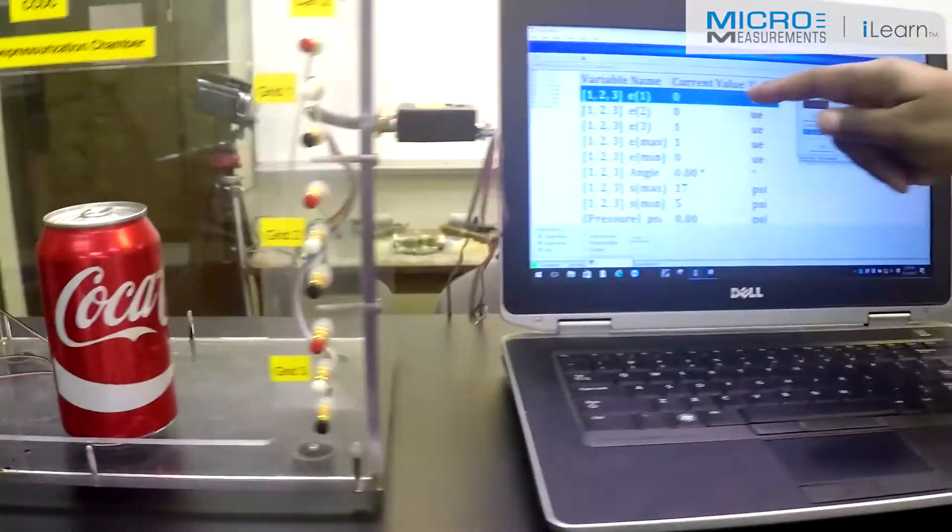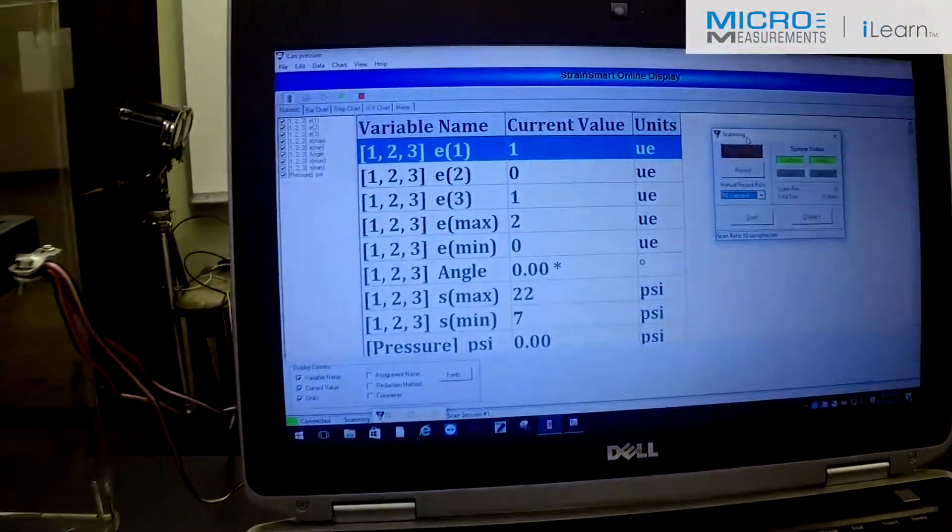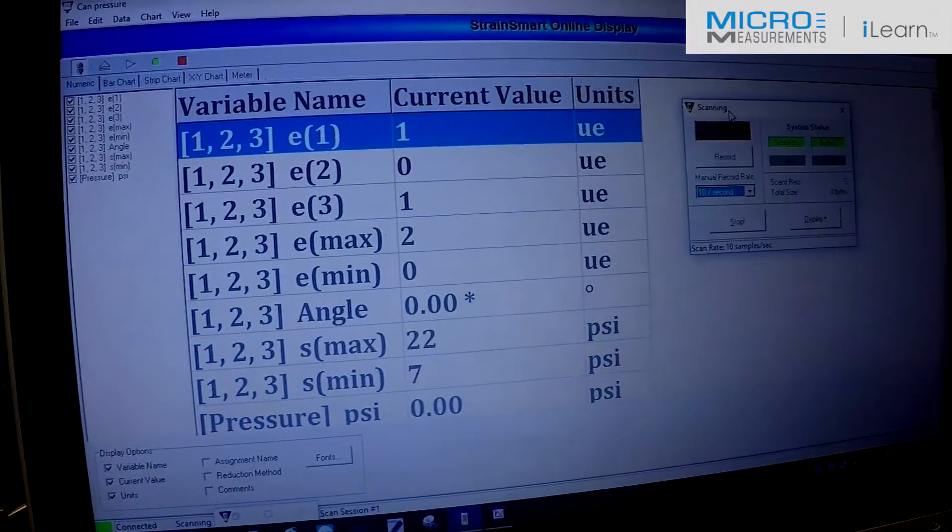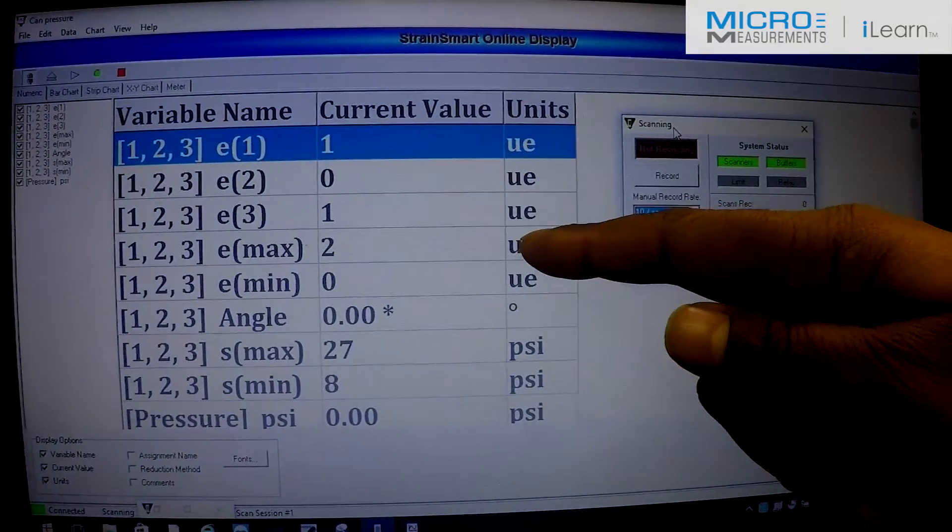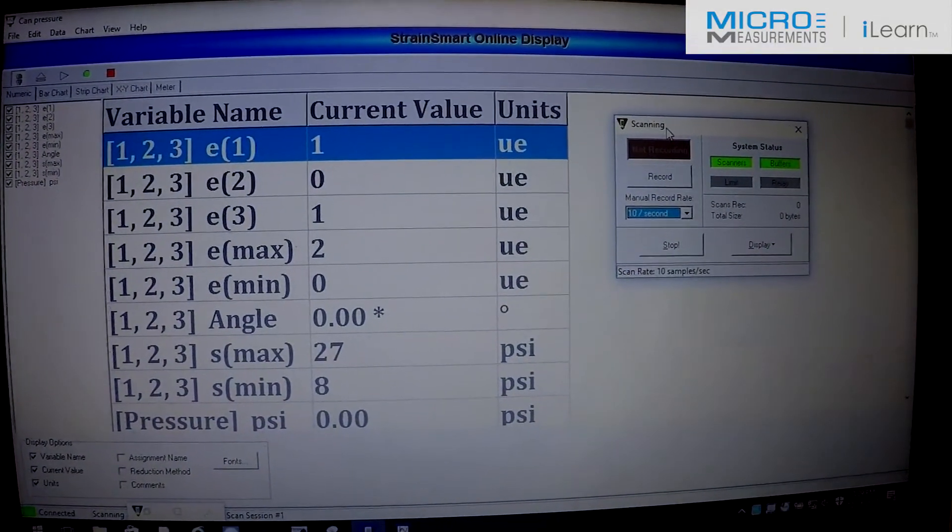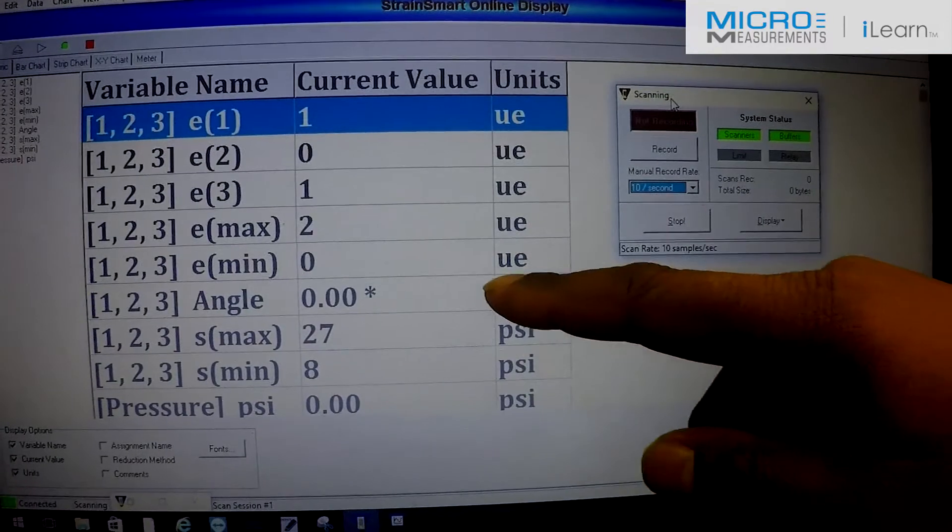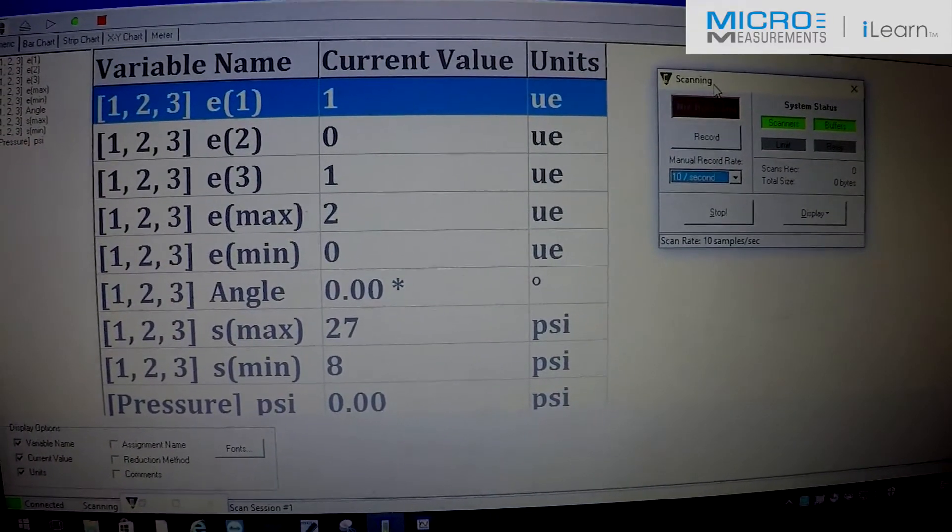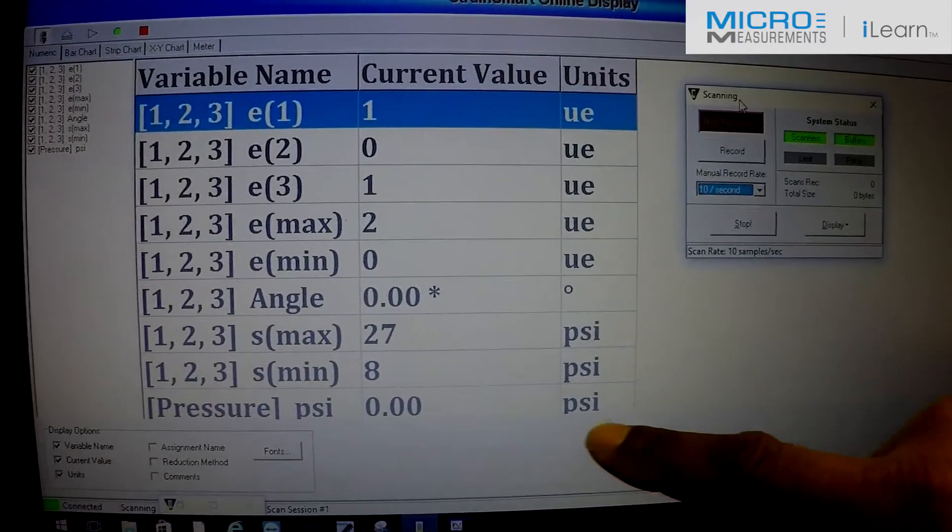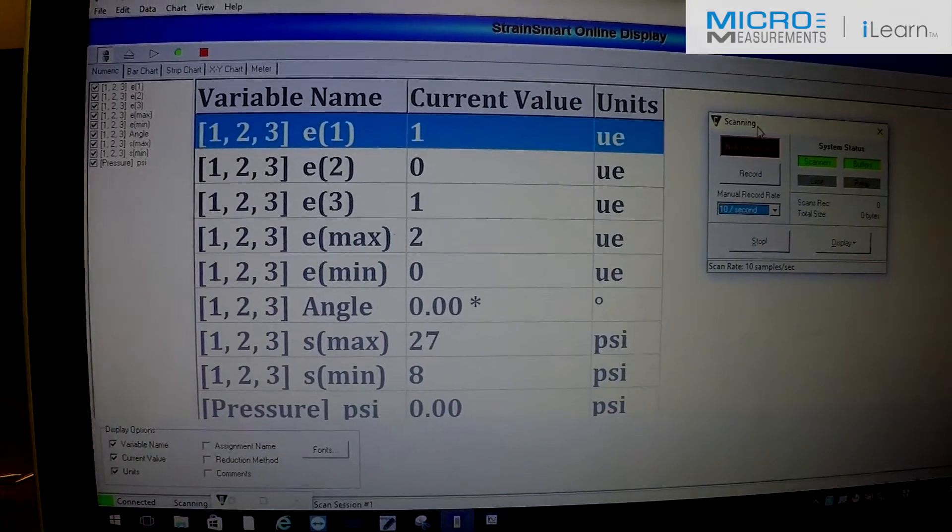And then we'll start scanning accordingly. As you can see by the readings, the first three are the individual grids on the can, which are very small because we haven't depressurized the can. We also have a maximum and minimal principal strains, the angles at which they're acting, and any principal stresses are located below. But ultimately, we're trying to get at the pressure here inside the can.